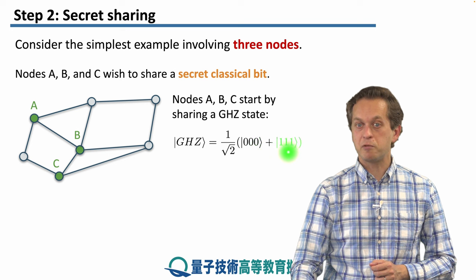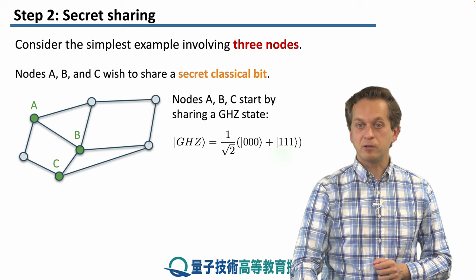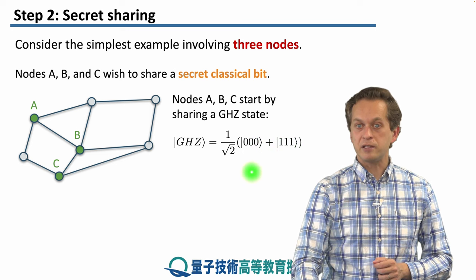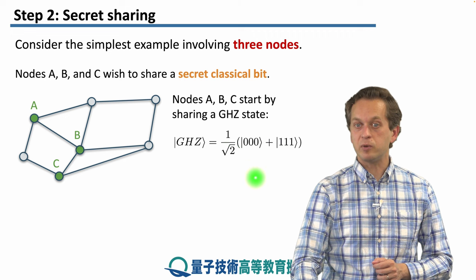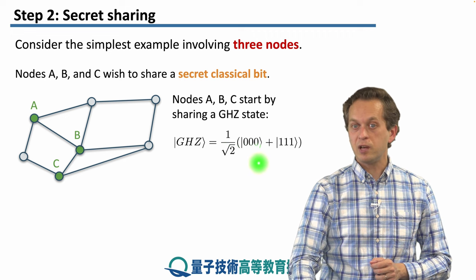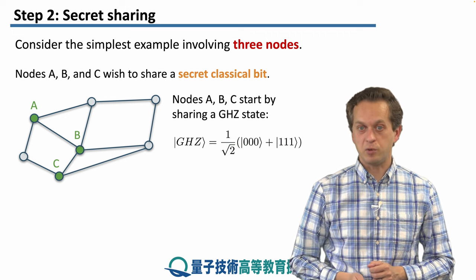This notation means that node A is in possession of the first qubit, node B is in possession of the second qubit, and node C is in possession of the third qubit.